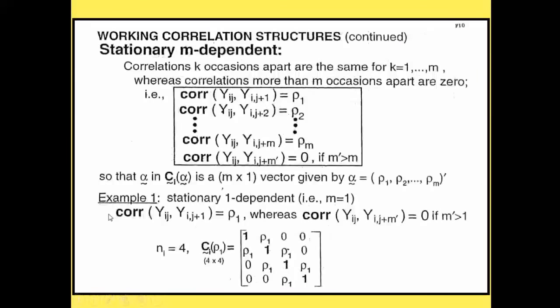Using GEE differs from quasi-likelihood in that you're now dealing with correlations. Because of repeated measures on subjects, the model becomes a matrix model — you have vectors of observations per subject. The model is still the same idea: it's a model for the expected value of Y where you specify a link function G and a variance relationship. Writing E(Y) = G-inverse(X'beta), G is the link function that transforms the mean into the linear part of the model.